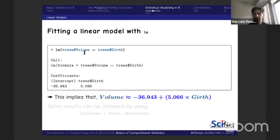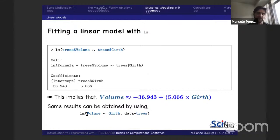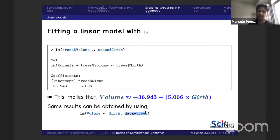The intercept is approximately −36.493 and the girth coefficient is the slope of the line — the point where the line intersects the Y axis, and the rate of change. You can also specify the same model using column names directly: `lm(Volume ~ Girth, data = trees)`. Very straightforward and simple to implement a linear model in R.